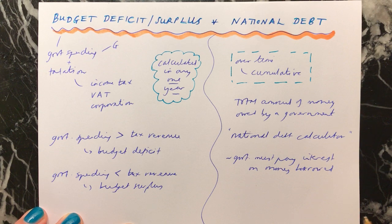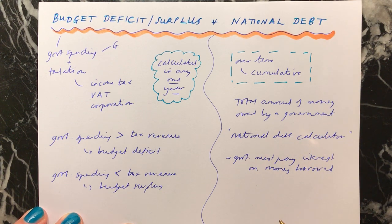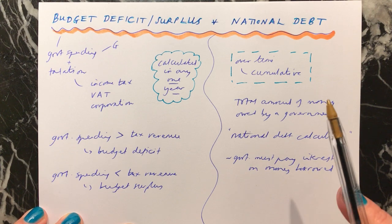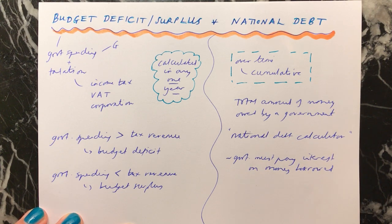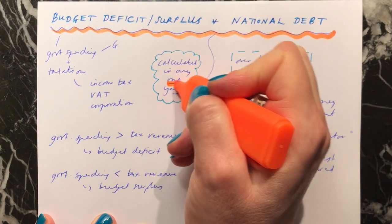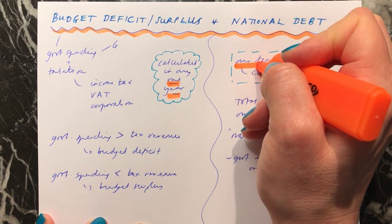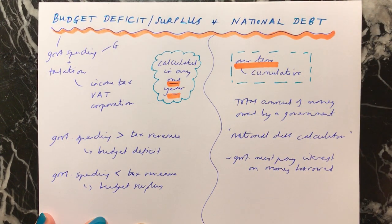This can really affect future generations if we have a large national debt. Although there is more being written about this, and some economists think that perhaps it doesn't matter if we have a large national debt — but that's something for another time. The main thing to remember is that a budget surplus or deficit looks at government spending and taxation in any one year, whereas national debt looks at government spending and taxation over time — it is cumulative.